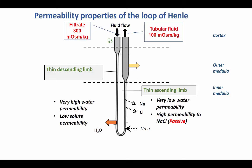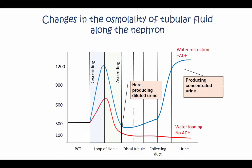The major role player lies in the outer medulla. Here is a diagram that is a graphic representation of the changes in the osmolality of the tubular fluid all along the nephron. This is a very important diagram and should help students understand the concentrating ability of the kidney.